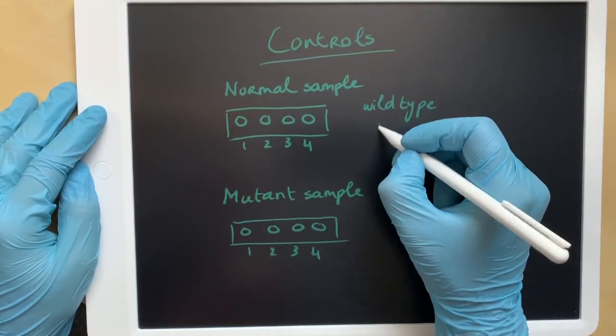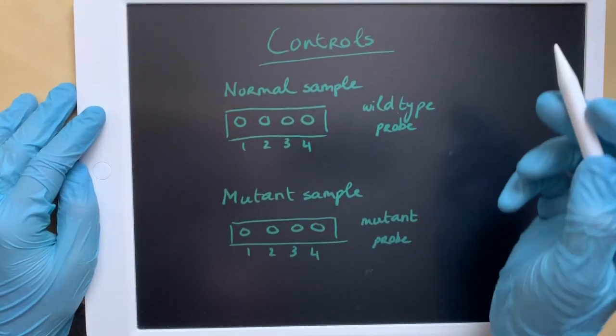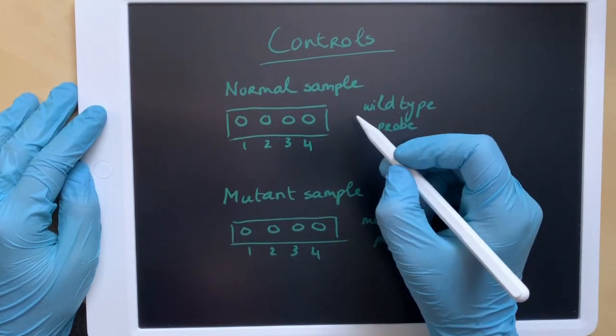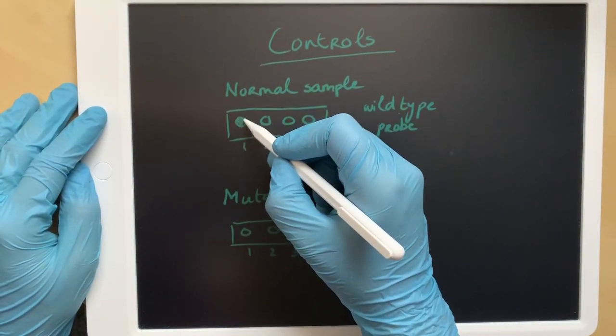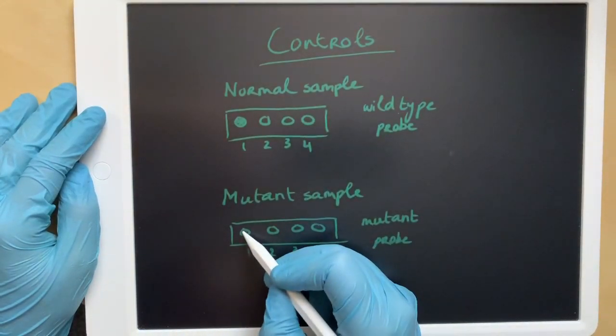The first control is done by adding the wild-type probe to the homozygous normal allele sample, and the mutant probe to the homozygous mutant allele sample.